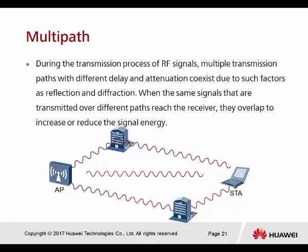The next is multi-path. During the transmission of a radio frequency signal, multiple transmission paths with different delays and attenuation coincide due to factors such as reflection and diffraction. For example, an outdoor AP placed outside a building in a public area — a user connected to the public AP trying to access the internet may experience interference from surrounding buildings that also provide Wi-Fi access, even if it is not free Wi-Fi, still causing interference.